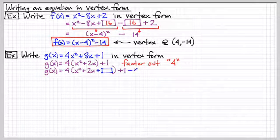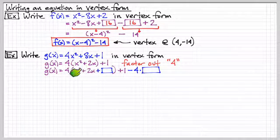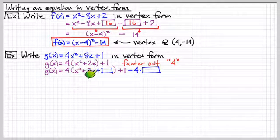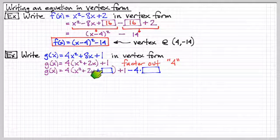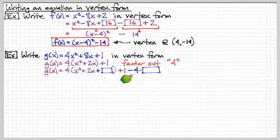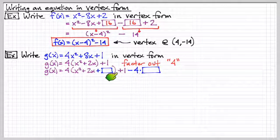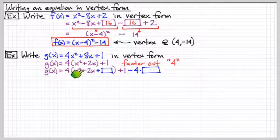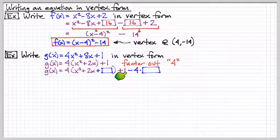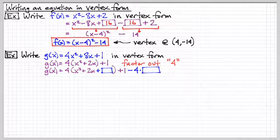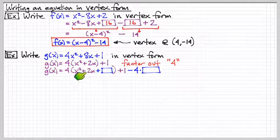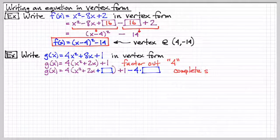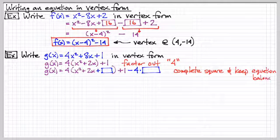So what we're going to do is notice the following here. I am going to add something here in order to complete the square. But if I add something to this equation, I need to subtract away that same amount. And I'm not just adding whatever I put in here, I'm adding four times that amount. So I need to subtract away four times that same amount. Now to complete the square, it's two divided by one squared. So I'm going to put a one here in order to complete the square.